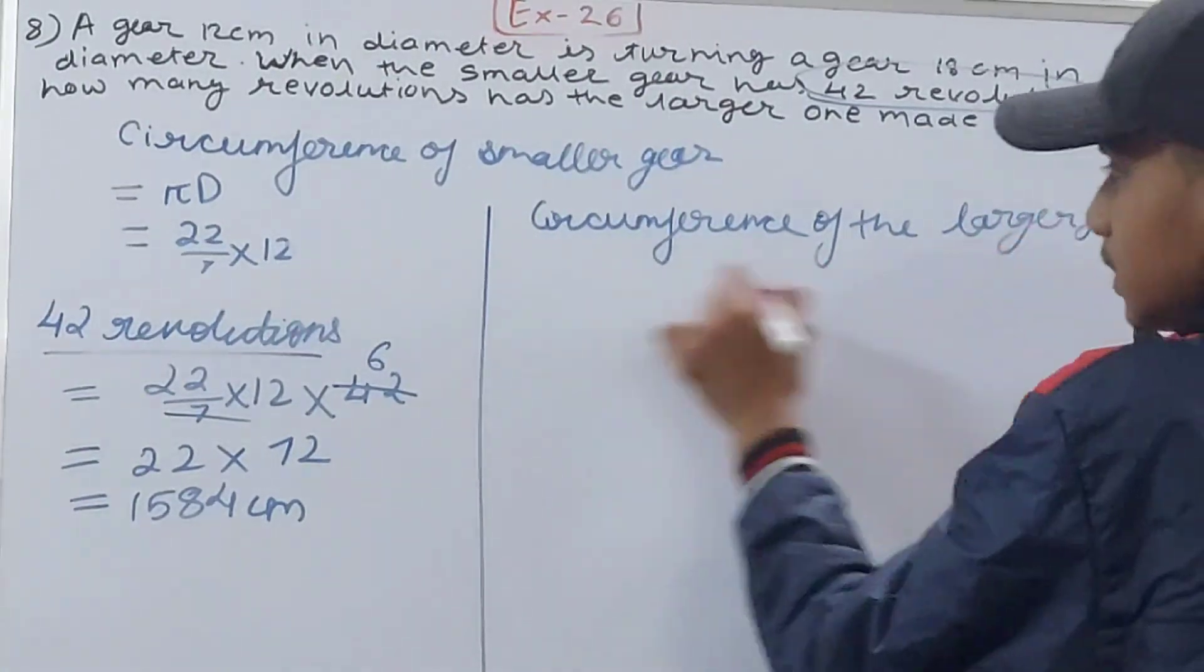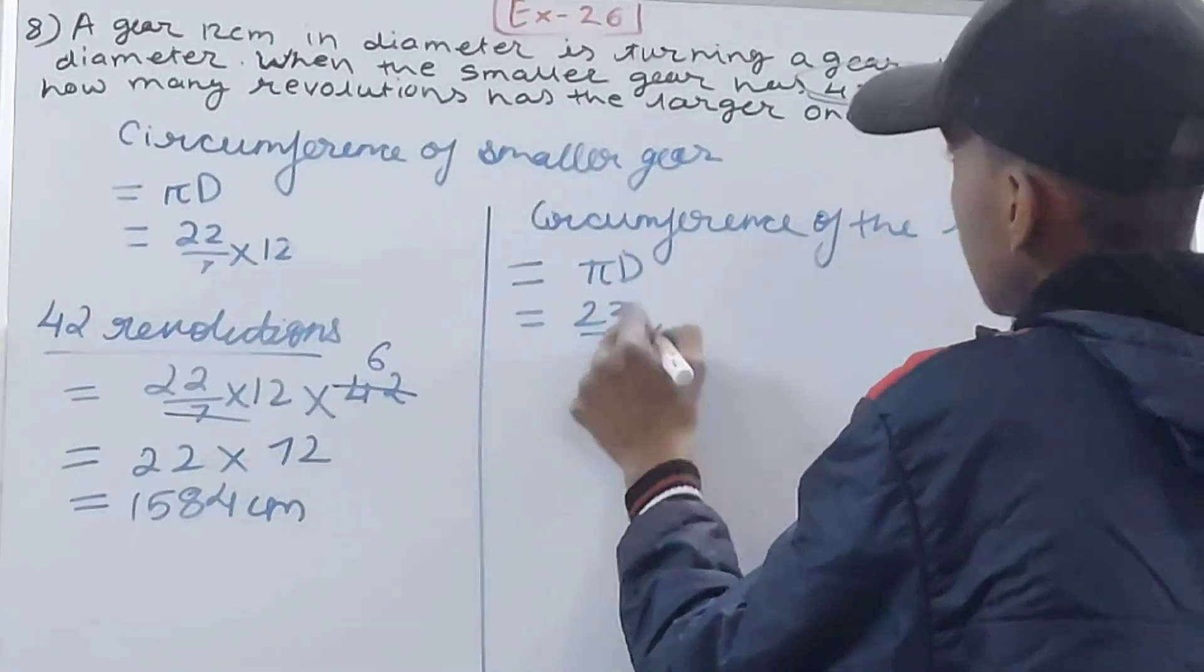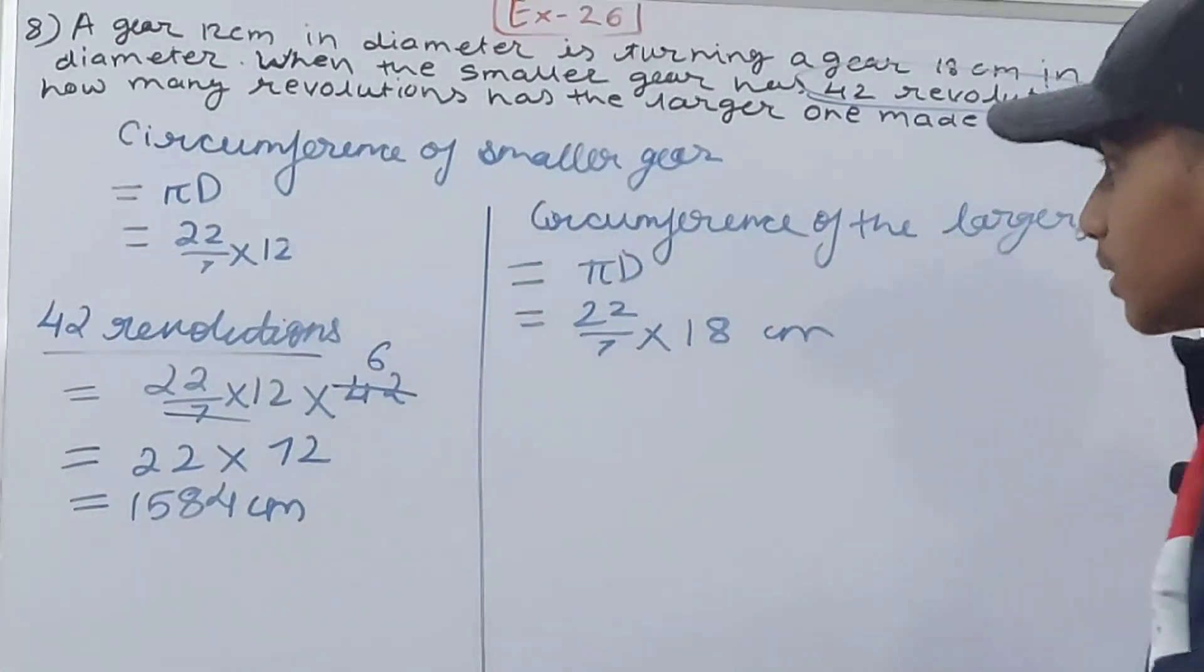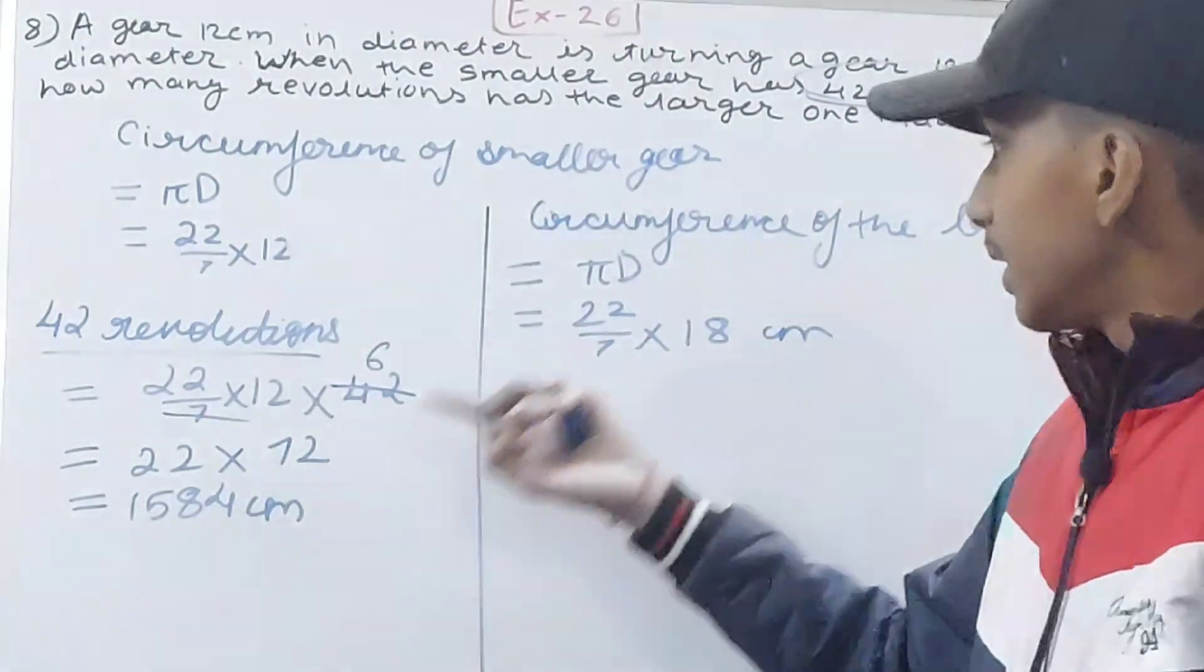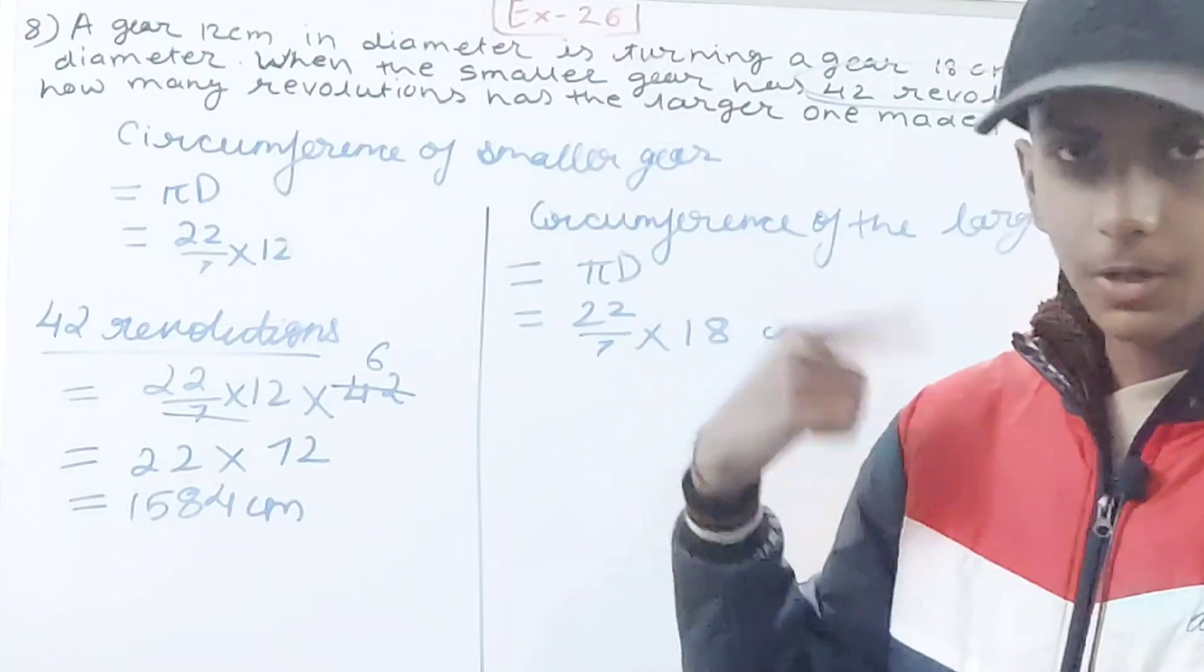Circumference of the larger gear will be πD again, so 22/7 × 18 centimeters. This is the circumference of the circle, or you can say the distance traveled in one revolution.